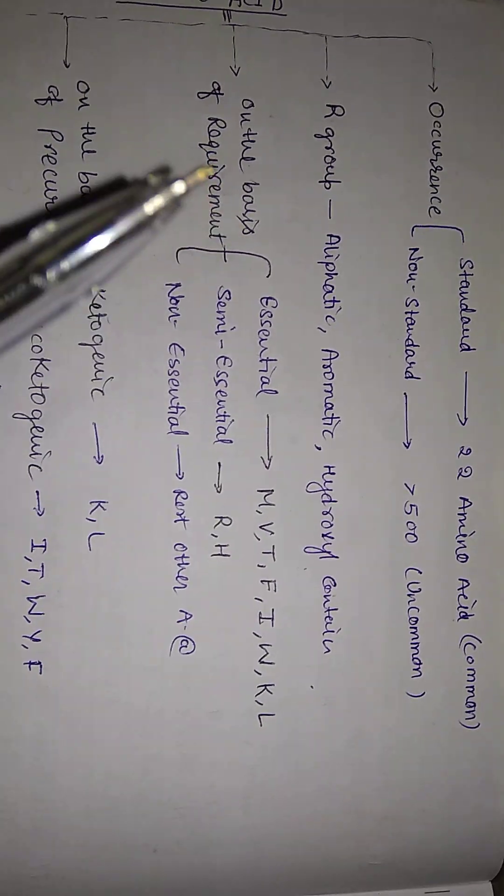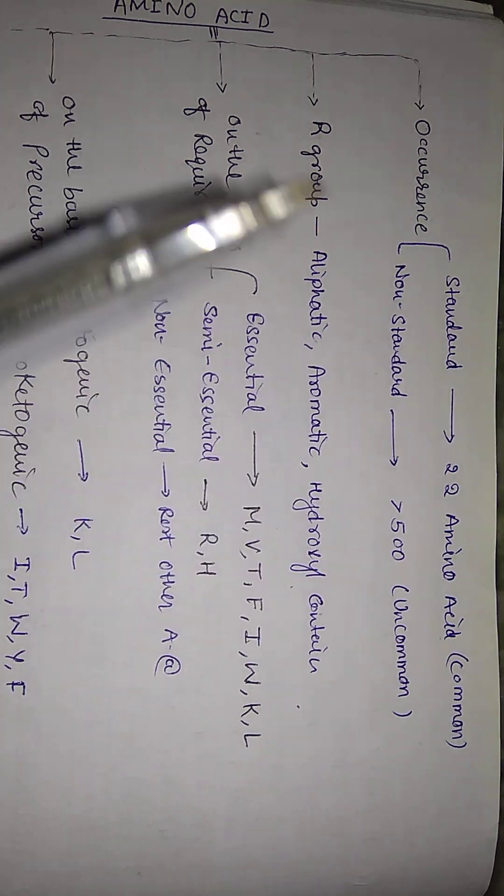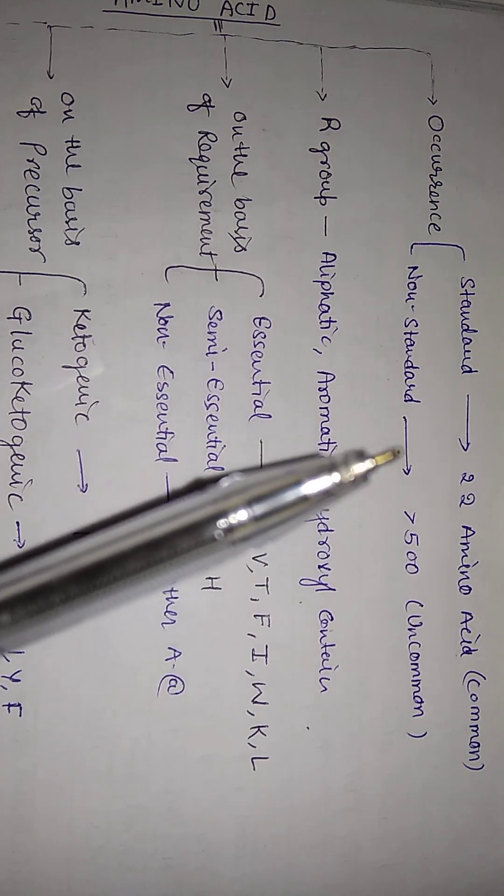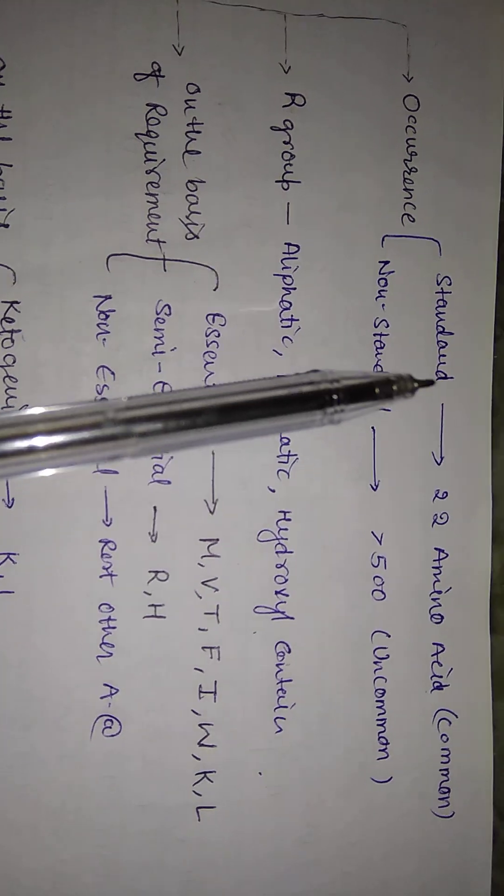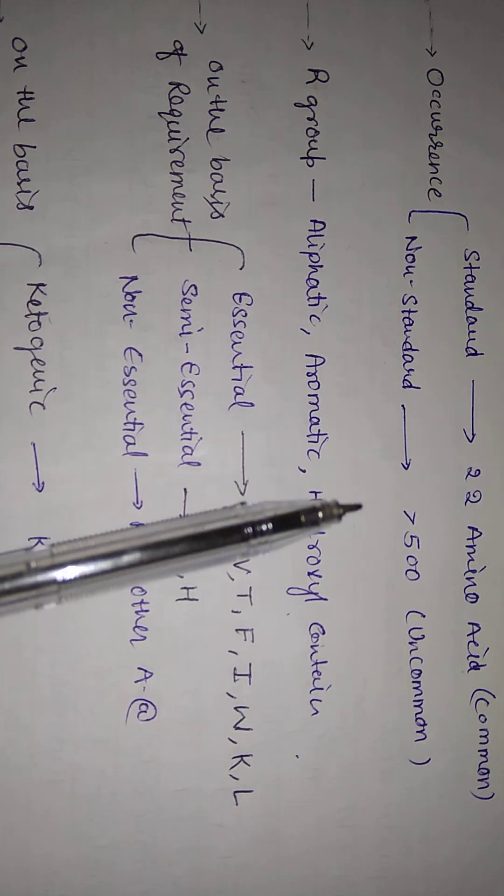We have learned how many types of amino acids there are and on which basis we divide them. First of all, we have learned on the basis of occurrence. In the last video, we learned about standard and non-standard.